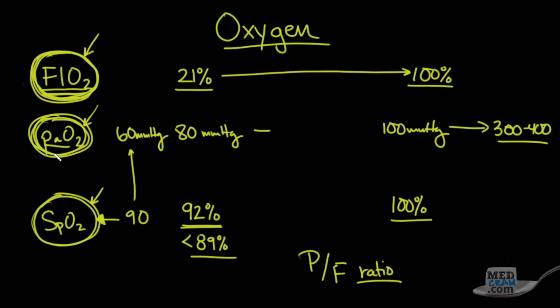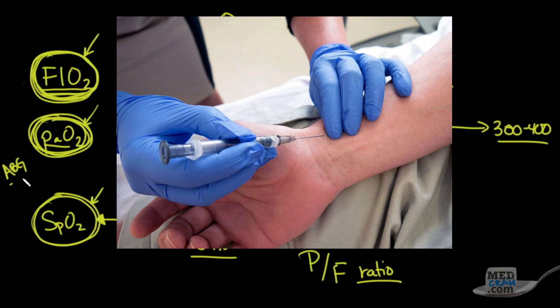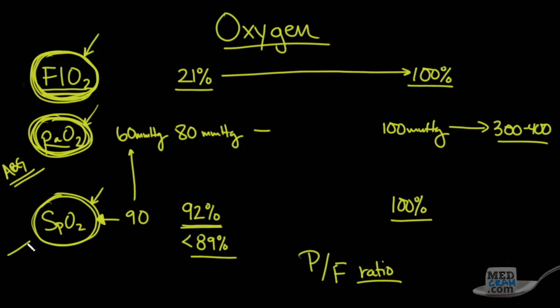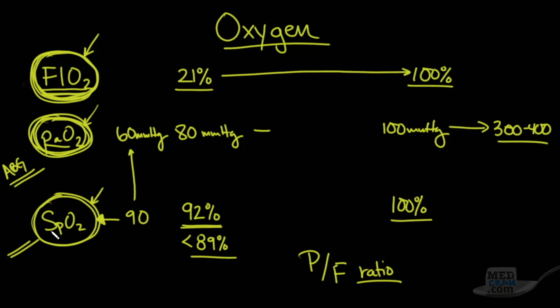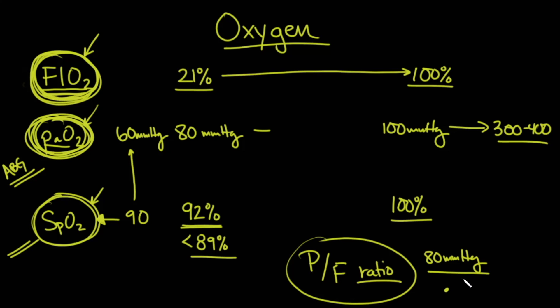By the way, the PaO2 can only be gotten on something called an arterial blood gas. That's where they actually poke your wrist to get arterial blood. The SpO2, on the other hand, can be gotten just off of a finger probe that they can actually tell what the saturation is. But to get a PF ratio, you're going to get a PaO2 and an FiO2. And so here, PaO2 could be something, for instance, like 80 millimeters of mercury divided by, let's say we have you on 50% FiO2, then that would be divided by 0.5. And therefore, a PF ratio in this case would be 160 millimeters of mercury. That would be the PF ratio.